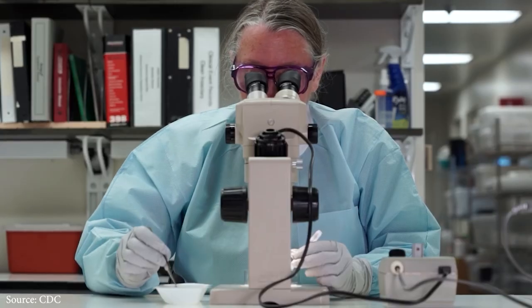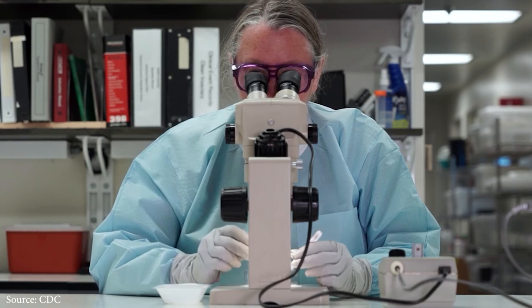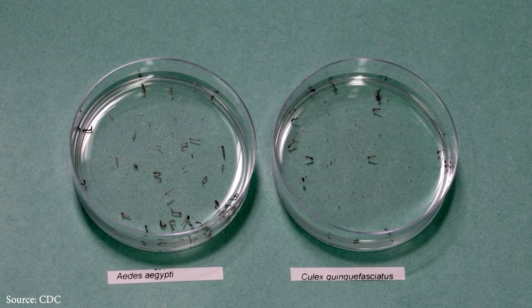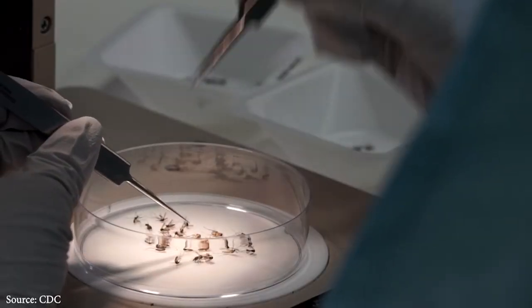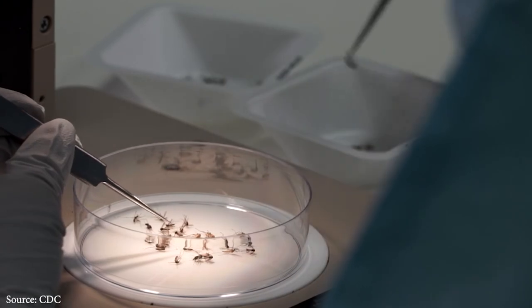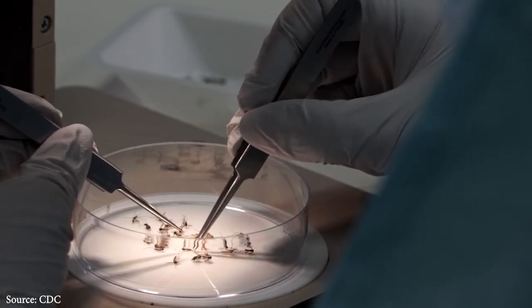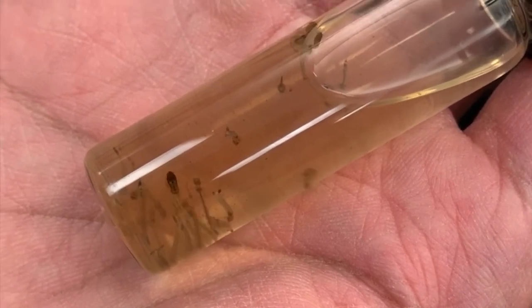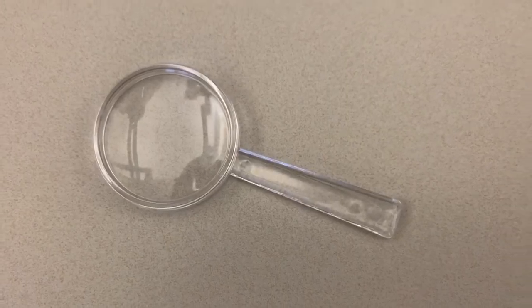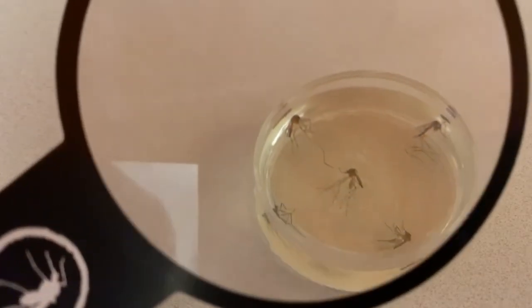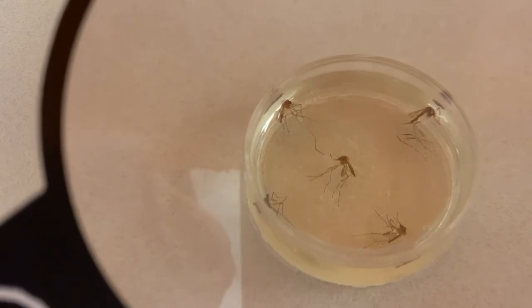Mosquito scientists often need to take a closer look at a mosquito — they might need to know what species it is or whether it's a male or a female. But you don't need a fancy microscope to do a little mosquito science of your own. If you find a mosquito or any mosquito larvae or pupae around your home, use a magnifying glass to get a closer look. Hold it about an inch away from the mosquito and take a look — you might see details you hadn't noticed before.